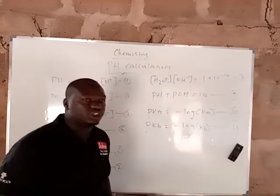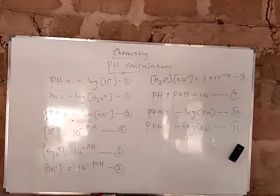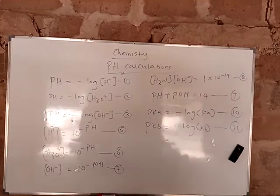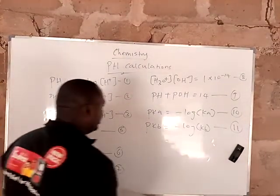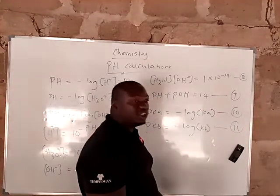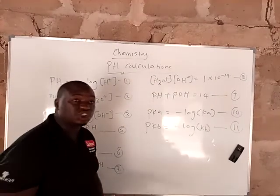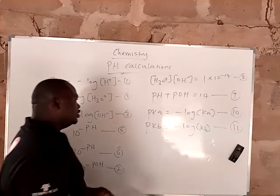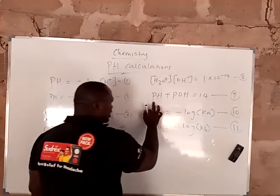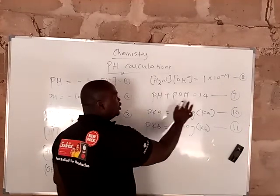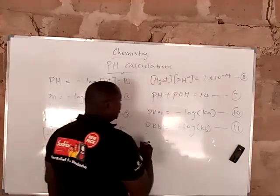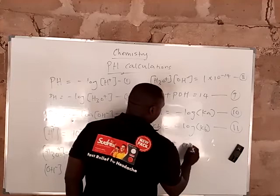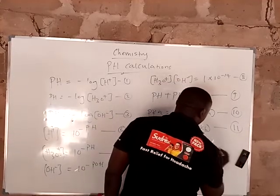Now I still want you to know something. Please note this: Ka is acid dissociation constant. Kb is basic dissociation constant. Write it down on your note immediately. Now from equation 9, pH plus pOH equals 14. The same thing is happening here. The pKa plus the pKb is equal to 14. And this is equation 12.